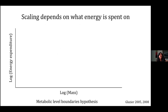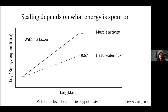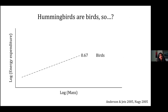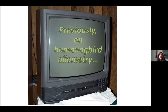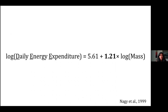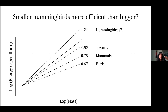Scaling also depends on what you're spending energy on. According to the metabolic level boundaries hypothesis proposed in the early 2000s, if you're spending energy on muscle activity and high-power things, your scaling slope is closer to one. Whereas if you're spending energy on thermoregulating or maintaining your body temperature, your slope is closer to 0.67, because it's related to the surface area of your body rather than the volume. Previously, work on hummingbird allometry in the 1900s found from a review study that their allometric slope is 1.21 — and that's insanely high. That's not at all what we'd expect any animal to have. Having a slope of more than one means that a larger animal is much more inefficient at using energy than a smaller animal, which means the giant hummingbird is far worse in efficiency than the tiny bee hummingbird.